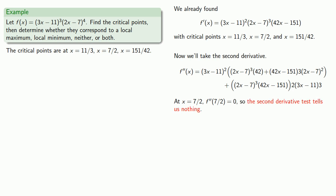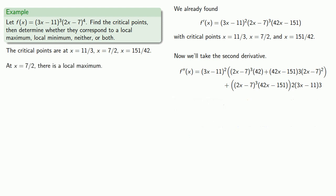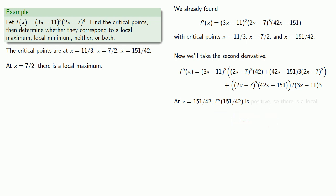We have to go to the first derivative test for x equals 7/2. Analyzing the sign of the first derivative, we find that x equals 7/2 is a local maximum value. Finally, for our third critical point at x equals 151/42, we substitute into the expression and find the second derivative is positive, so there is a local minimum at x equals 151/42.